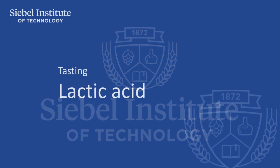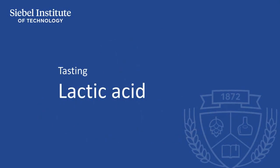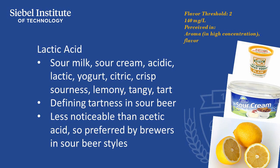With flavors of sour milk and yogurt, lactic acid is associated with beer spoilage in most beers, yet it forms a defining tart characteristic in sour beer styles. The aroma is less noticeable than that of acetic acid, and the sourness is less sharp while still being easily perceived. When brewers are creating sour beers, they prefer lactic acid over acetic acid as the dominant sour flavor and aromatic character.